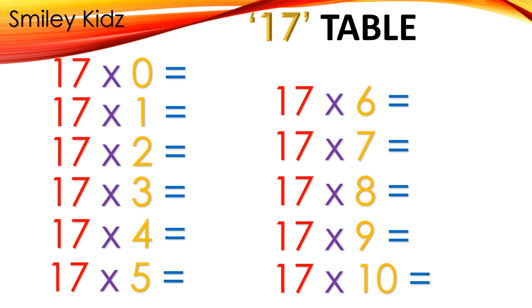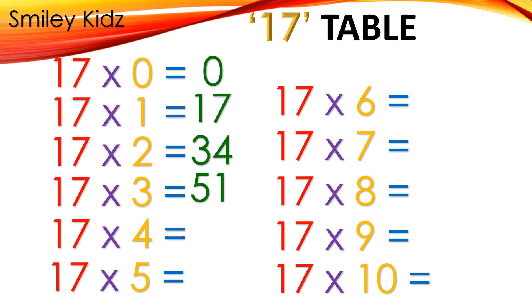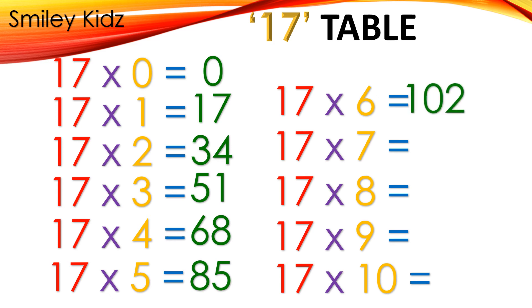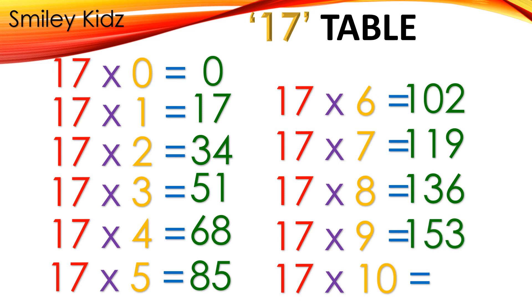Table 17: 17×0=0, 17×1=17, 17×2=34, 17×3=51, 17×4=68, 17×5=85, 17×6=102, 17×7=119, 17×8=136, 17×9=153, 17×10=170.